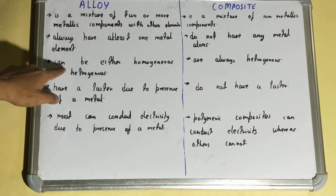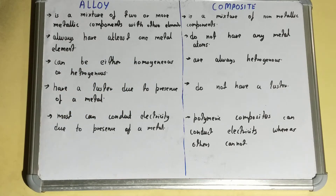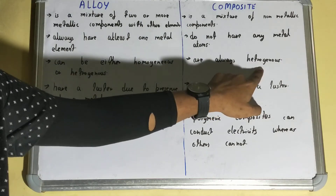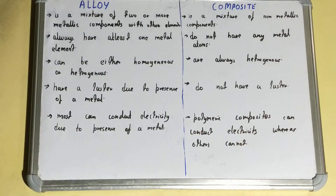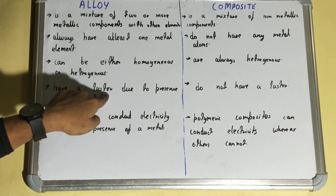Next, if we talk about the alloy, it can be either homogeneous or heterogeneous. So your alloy exists in both kinds — homogeneous as well as heterogeneous. But if we talk about the composite, they are always heterogeneous.